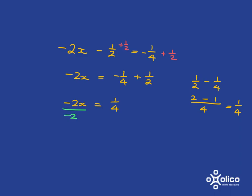And I don't want to put a fraction over a fraction, so I'm actually just going to write it as divide by negative 2. So here I've got x. Here I've got a quarter divided by negative 2, which is just negative 2 over 1.